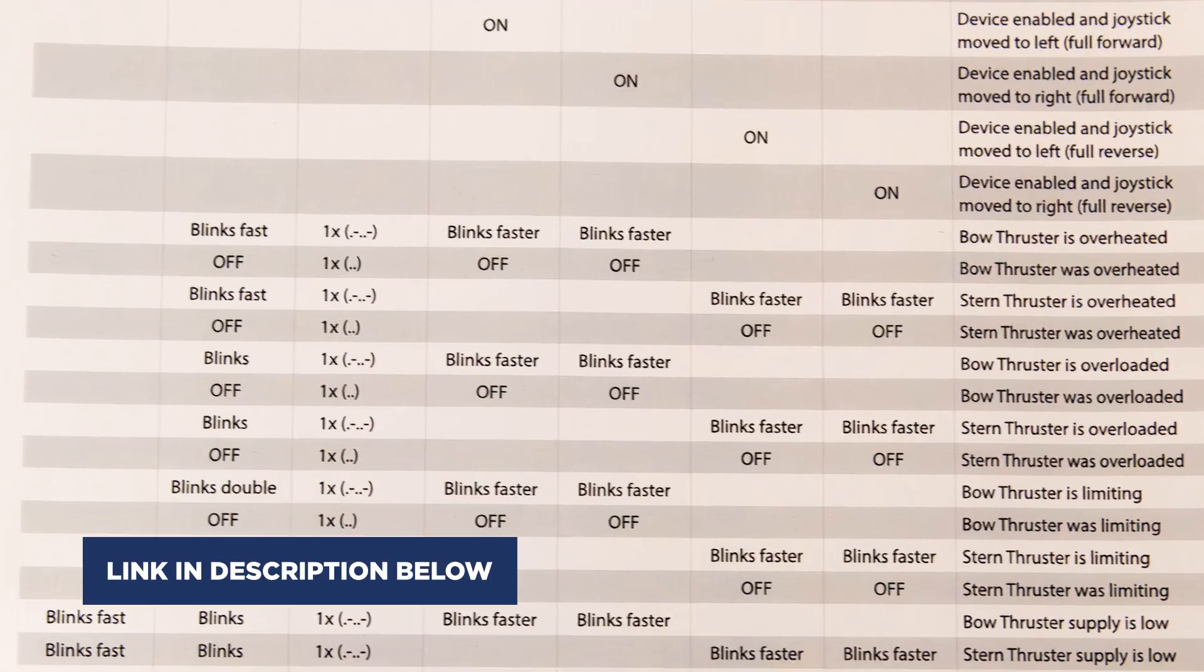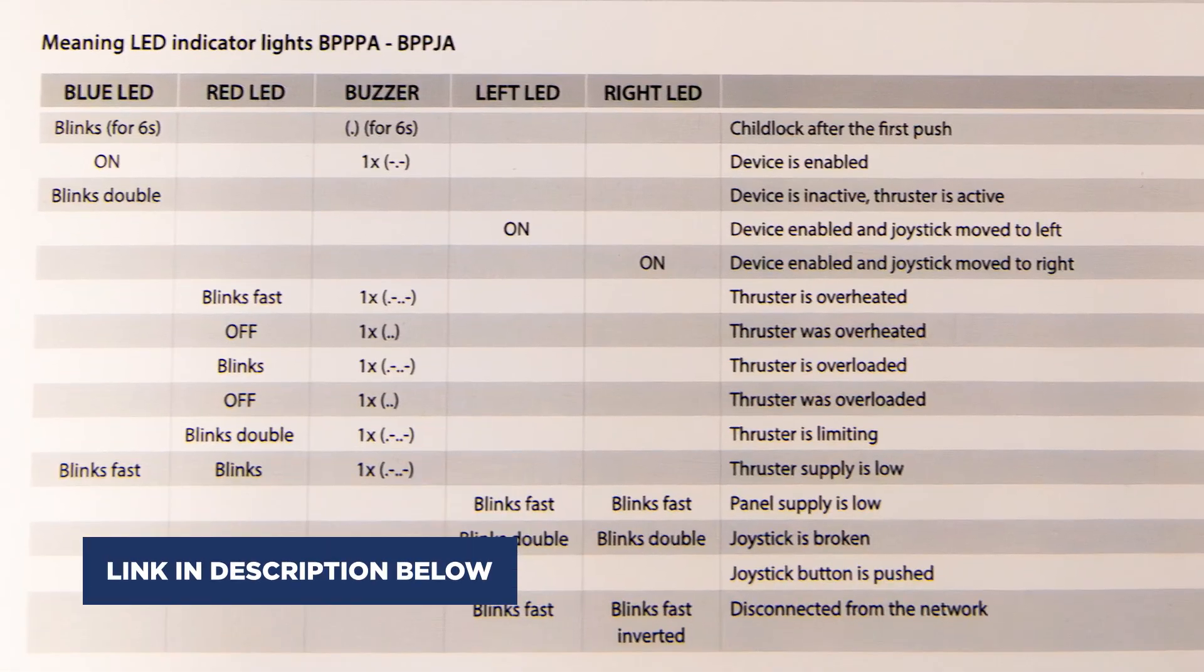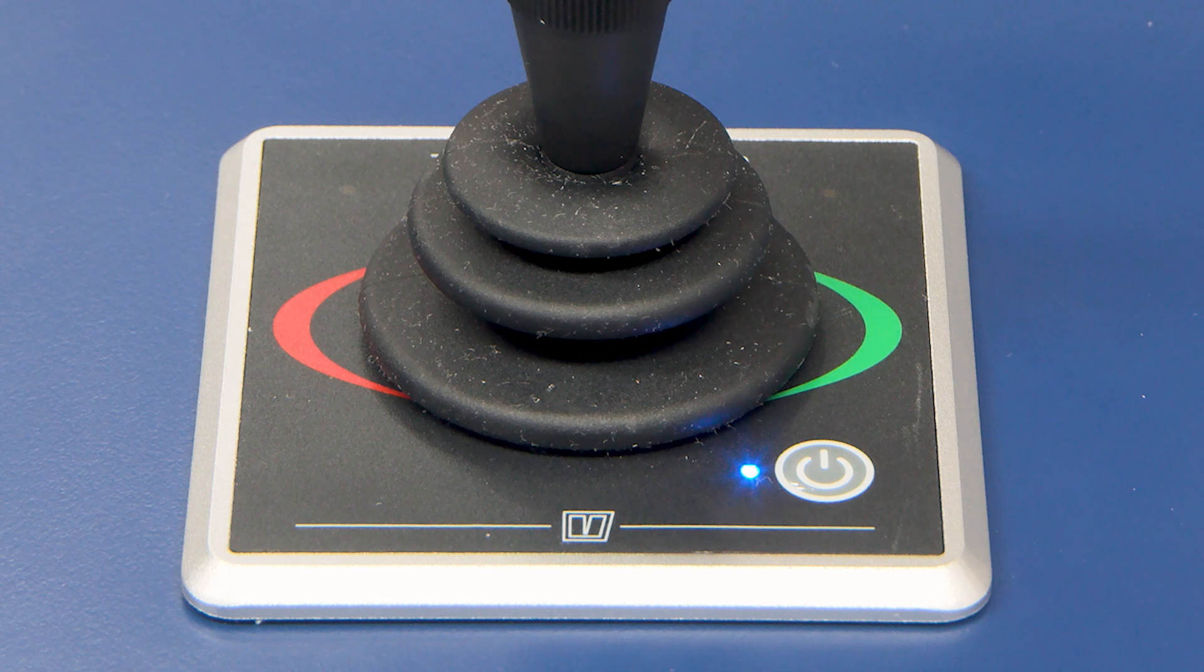In the video description you will find the table with the most frequent errors. If the power supply to the bow thruster is low you'll notice that the LED lights blink faster.